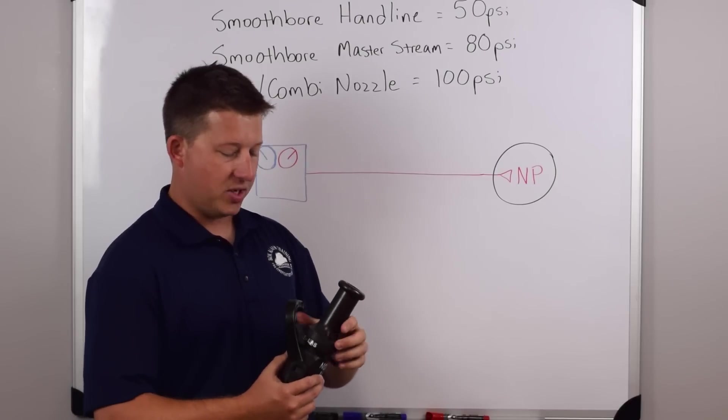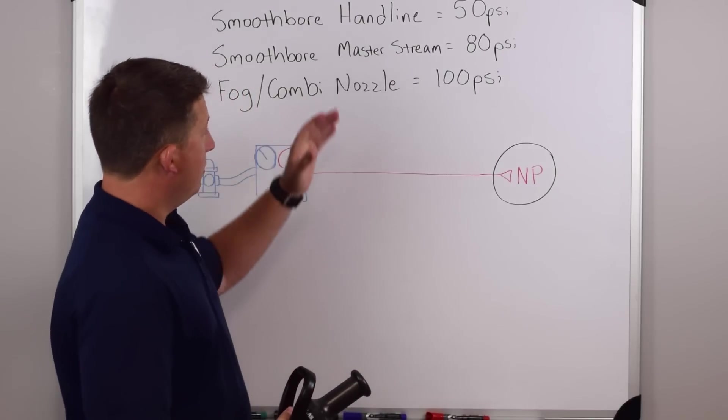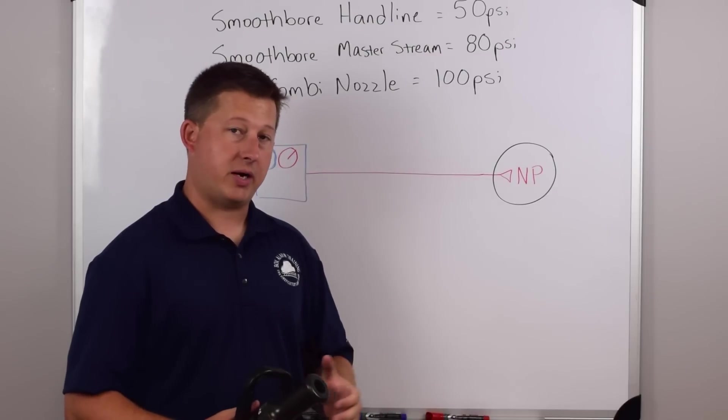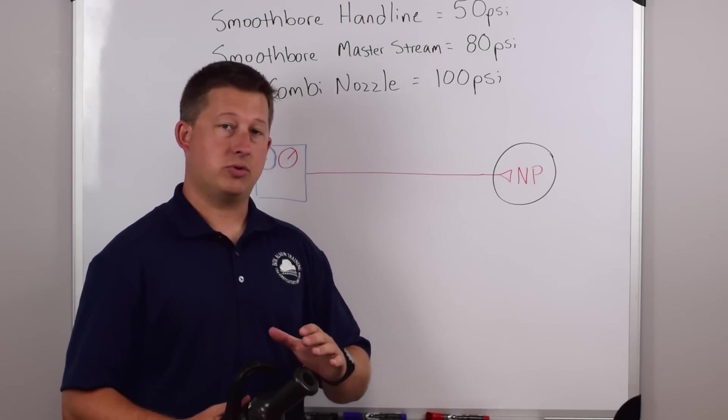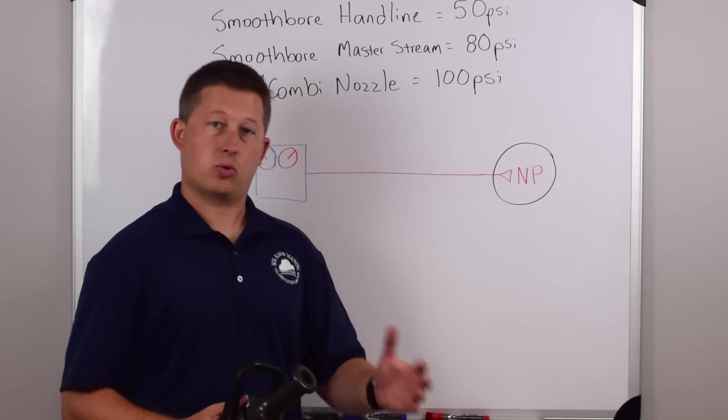So a smoothbore hand line is typically going to operate at 50 PSI, 50 pounds of pressure per square inch. Some people like to use that smoothbore nozzle over pressurized or under.